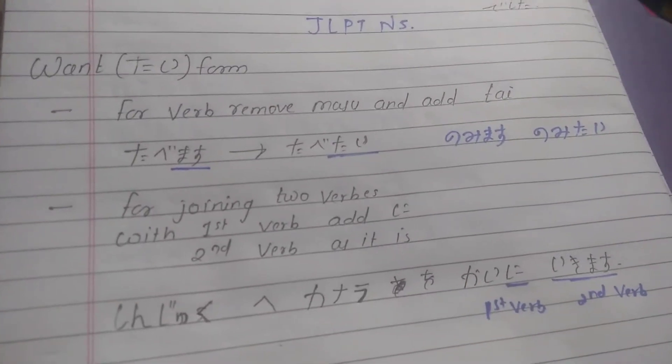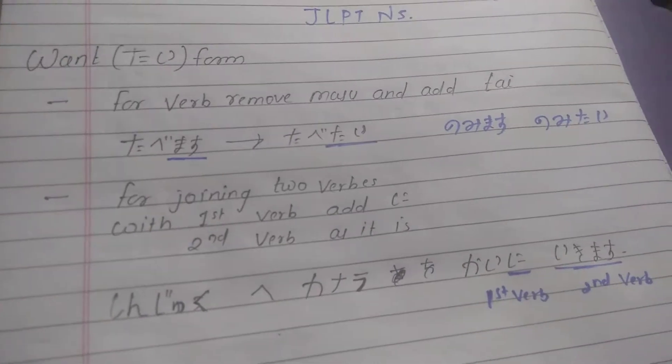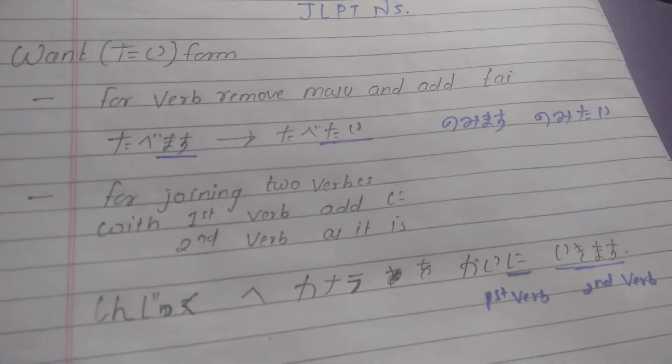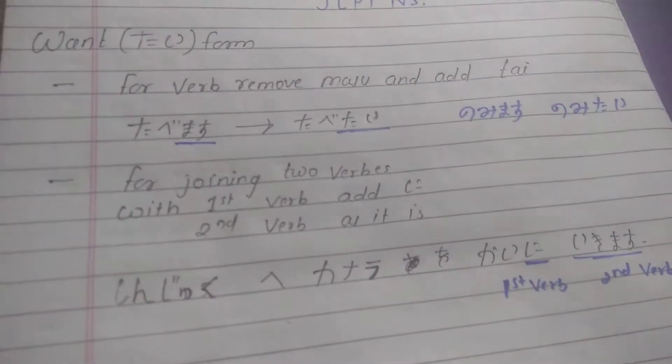Hey guys, welcome to the series Nihongo Na Kotoba. Today we're going to discuss the want form or tai form. Tai form is basically the want form - if you replace masu with tai, then a word will become 'want to.'